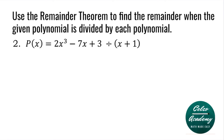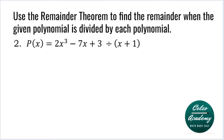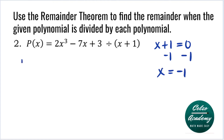Question number two: P of X is equal to 2X cubed minus 7X plus 3, divided by X plus 1. Solving for X, we write X plus 1 is equal to 0. Subtracting 1 from both sides, our X value is negative 1. So to find the remainder, we need to evaluate P of negative 1.